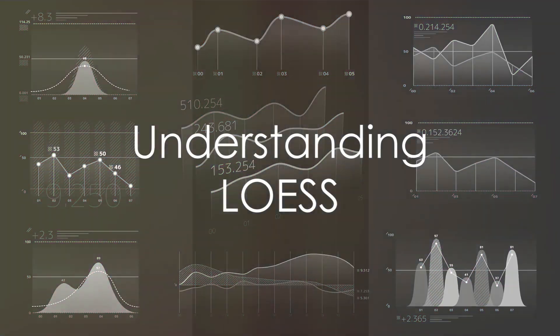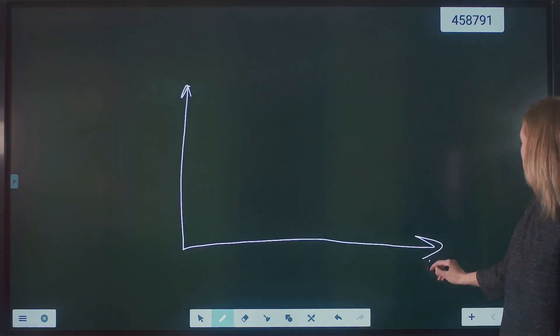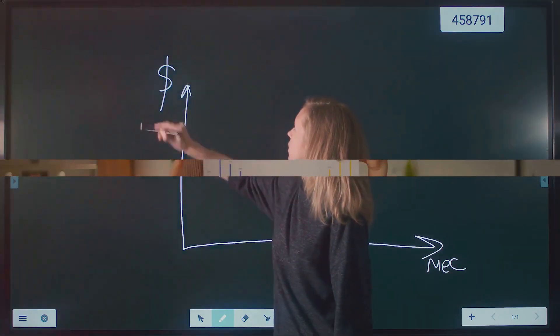Imagine a scatterplot. Points are all over the place representing different variables. Now the goal is to make sense of this data scatter. This is where LOESS steps in.